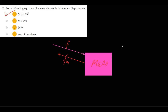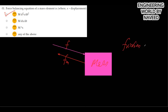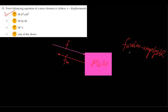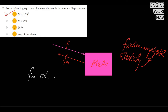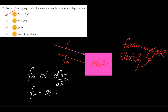The friction is negligible and the elasticity is also negligible. So this is the applied force and this is the opposing force. The mass will offer an opposing force proportional to the acceleration of the body. So f_m will be proportional to d²x/dt², which gives f_m = m d²x/dt².